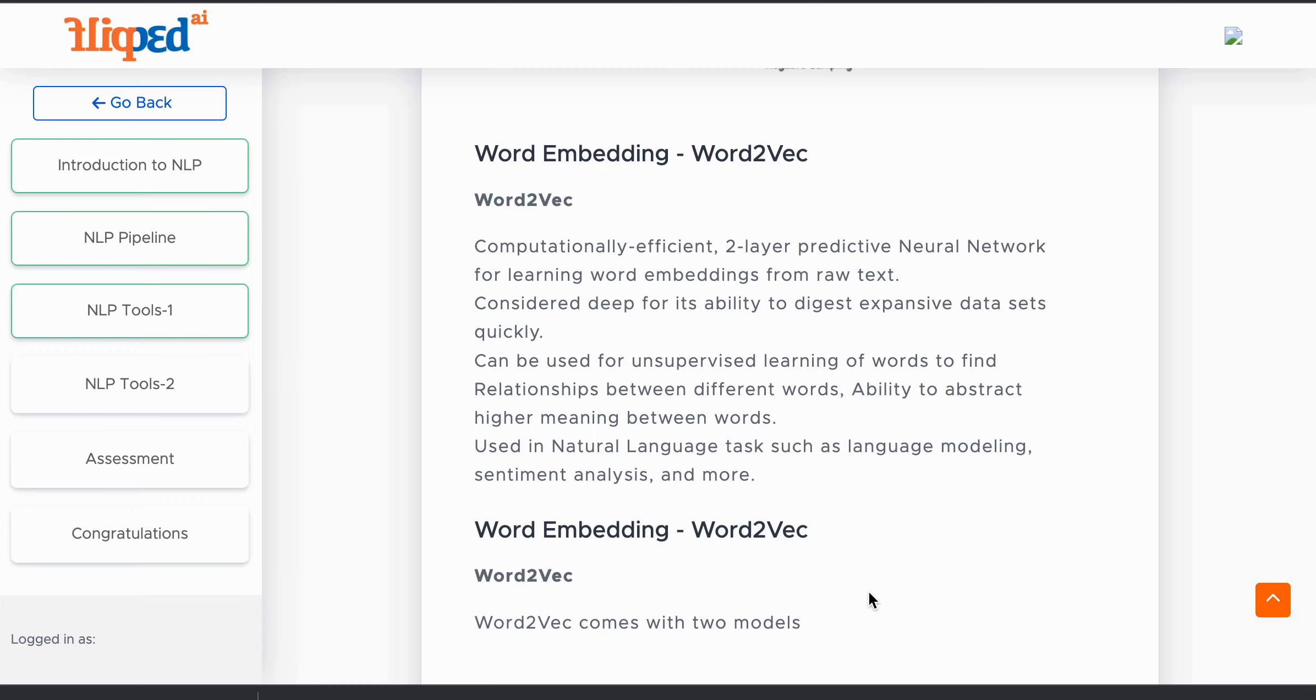This model can even be used for unsupervised learning of words to find relationships between different words, and it also has the ability to abstract higher meaning between words. This model is used in natural language tasks such as language modeling, sentiment analysis, and more.